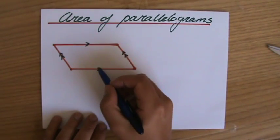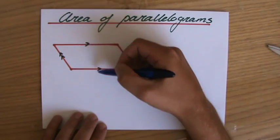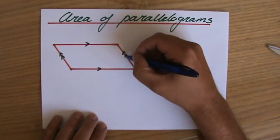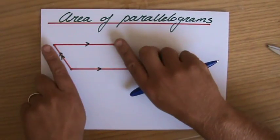One arrow here and one arrow there to make sure you understand. That's one pair and two arrows here to distinguish. That is my second pair.